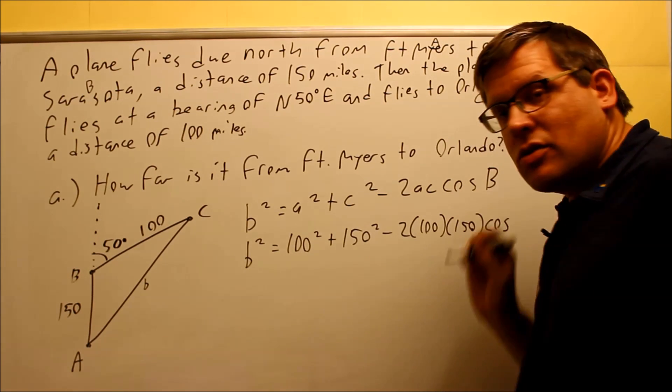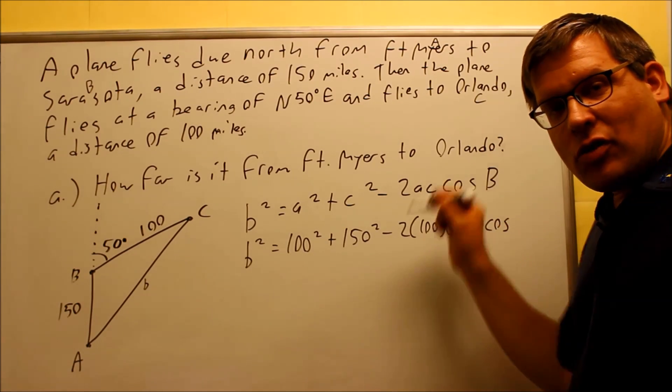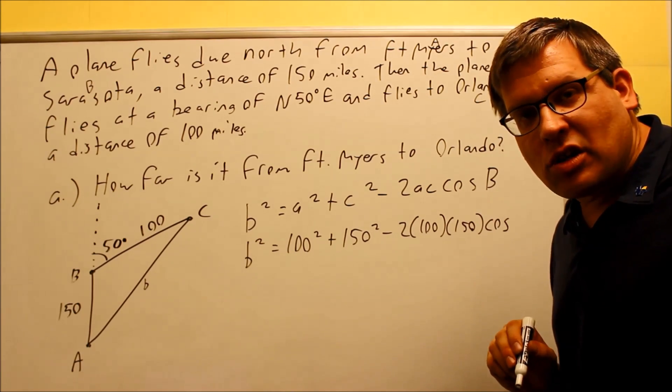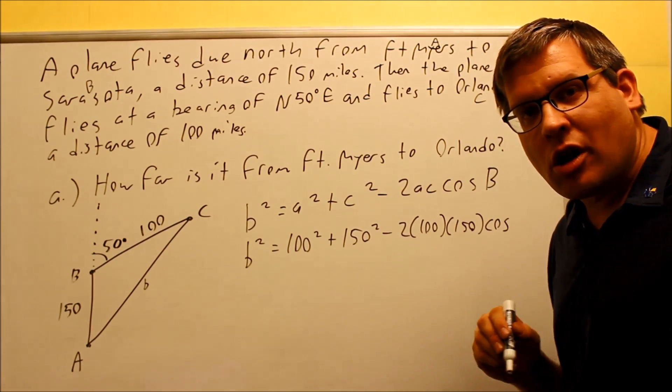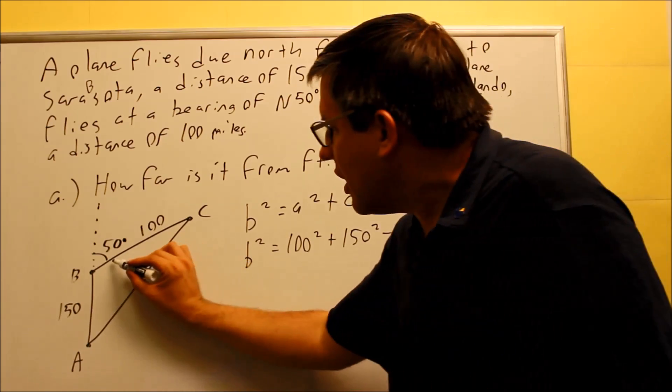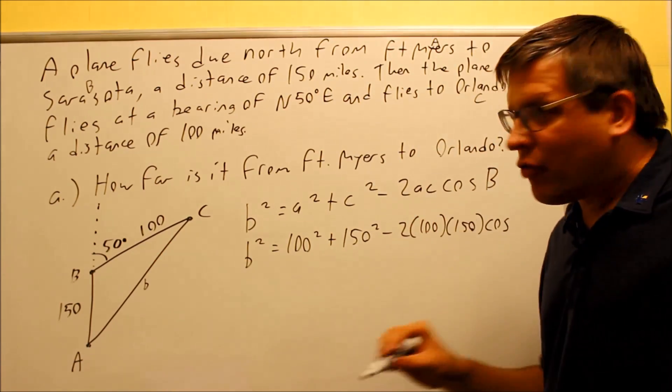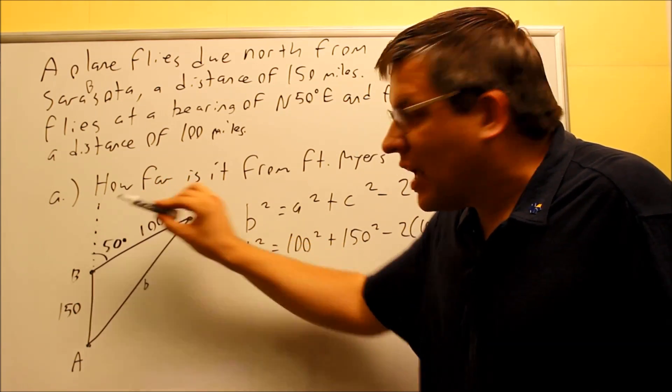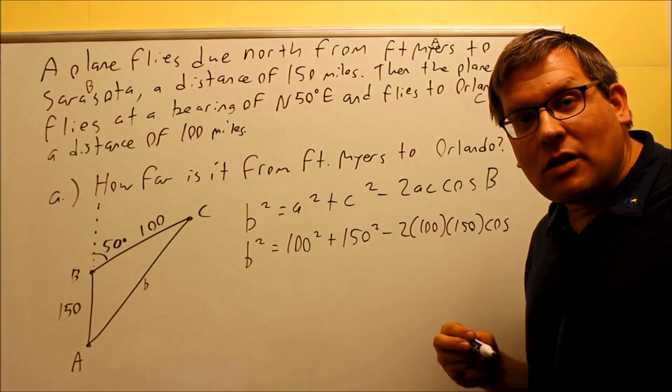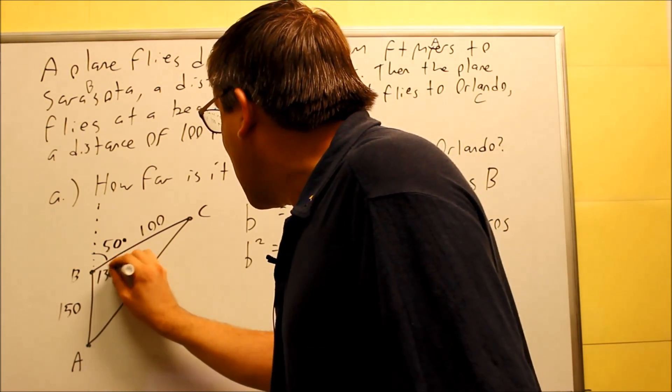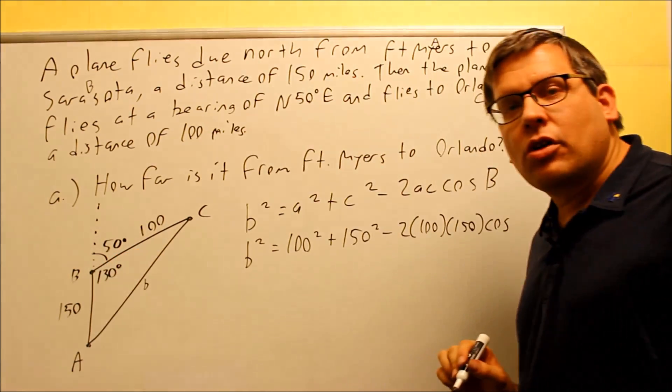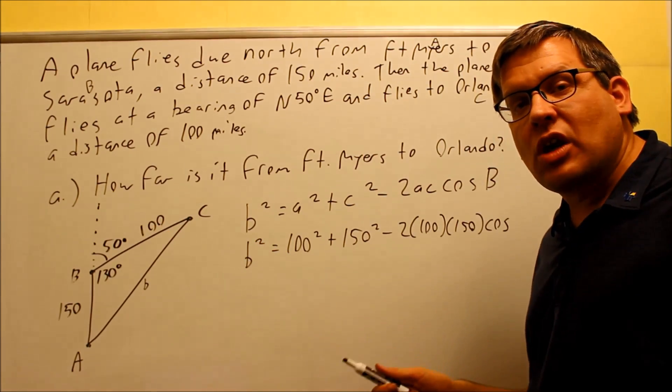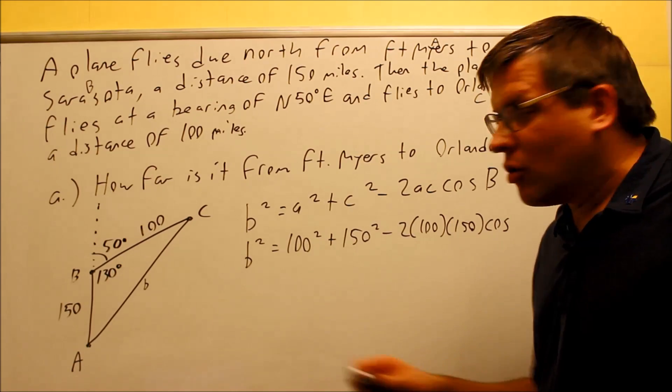Now what is angle B? If you think it's 50, unfortunately that's not correct. You can't use 50 because 50 falls on the outside of the triangle. You want to use the angle inside the triangle. It's very important that you always use the angle inside. Now how we're going to find that is we're going to use the fact that a straight angle right here has to add up to 180. So therefore I know that this inside has to be 130 degrees. It's going to be 180 minus the 50 gives you 130.